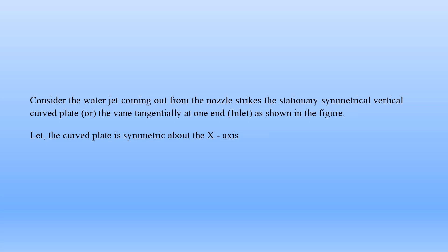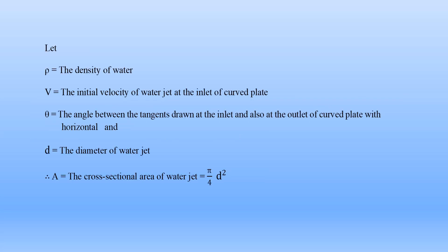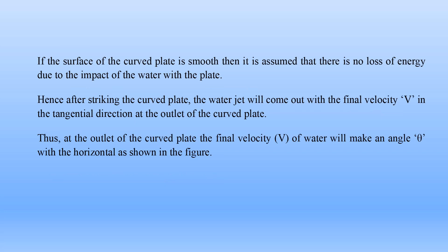In the second condition: rho is the density of water, V is the initial velocity of water jet at inlet, theta is the angle made by the tangent at inlet and outlet with horizontal (since it is a symmetrical curved plate), D is the diameter of the water jet, and the area A = (π/4)D². The surface is smooth so there is no loss of energy, and the final velocity Vf = V.